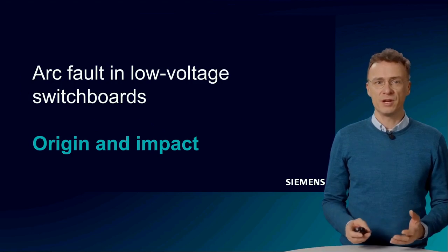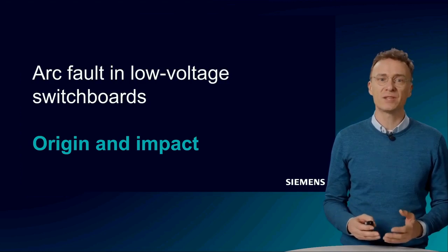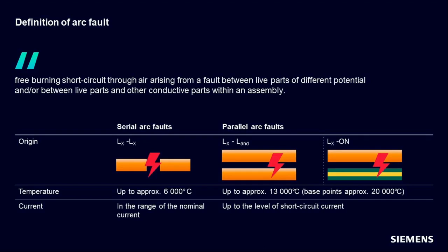Before we go deeper, we should first look at what an arc fault is and what can lead to this worst-case scenario. According to the definition in the standard, an arc fault is a short circuit burning freely in air that can occur as a result of a fault between active parts of different potentials and/or between active parts and other conductive parts within a switchgear assembly. This ionizes the air and makes it conductive, allowing current to flow more or less unhindered in the resulting plasma.